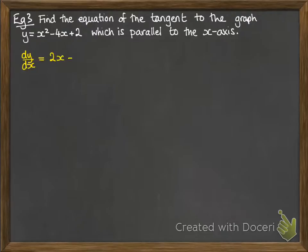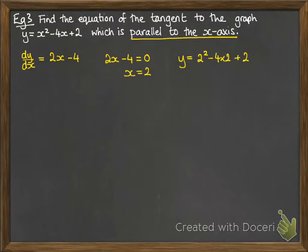dy/dx - if we differentiate y, we get 2x minus 4. It being parallel to the x-axis means that has to equal 0. We know that this occurs when x equals 2. We find out the y-coordinate when x equals 2 is minus 2.